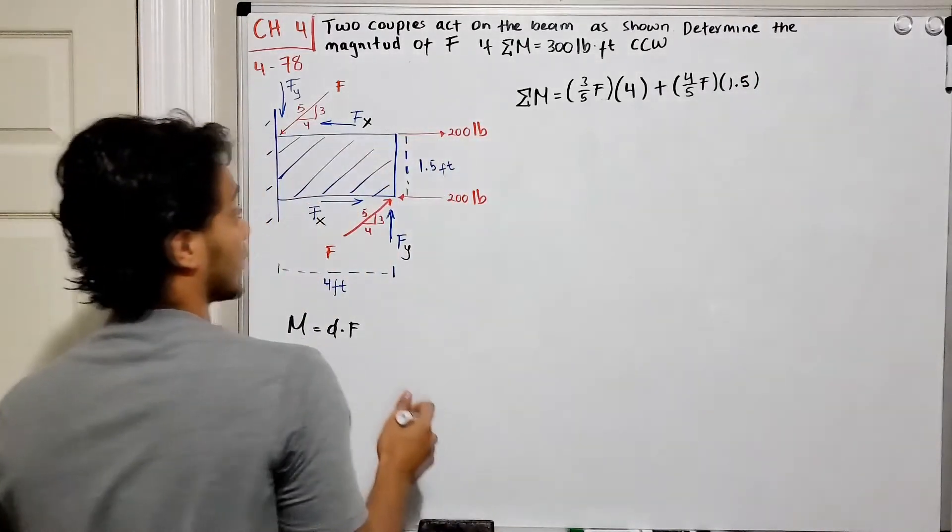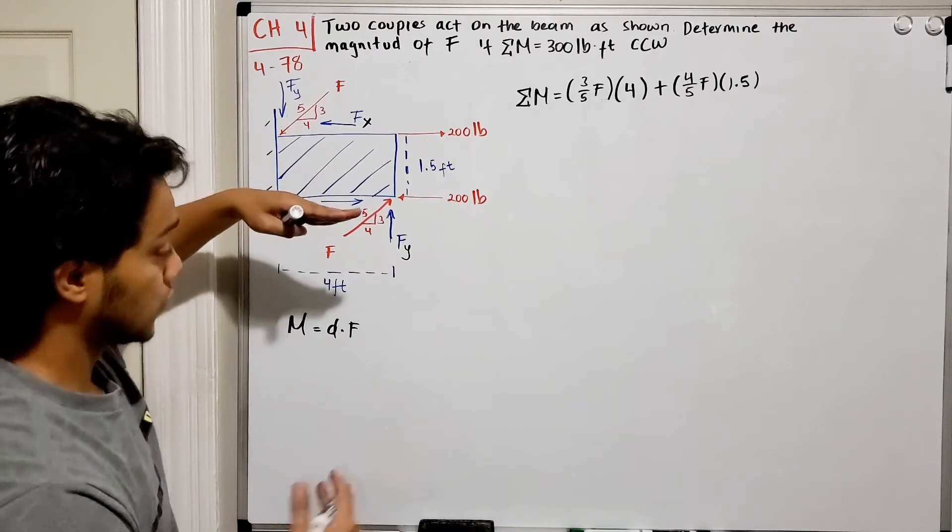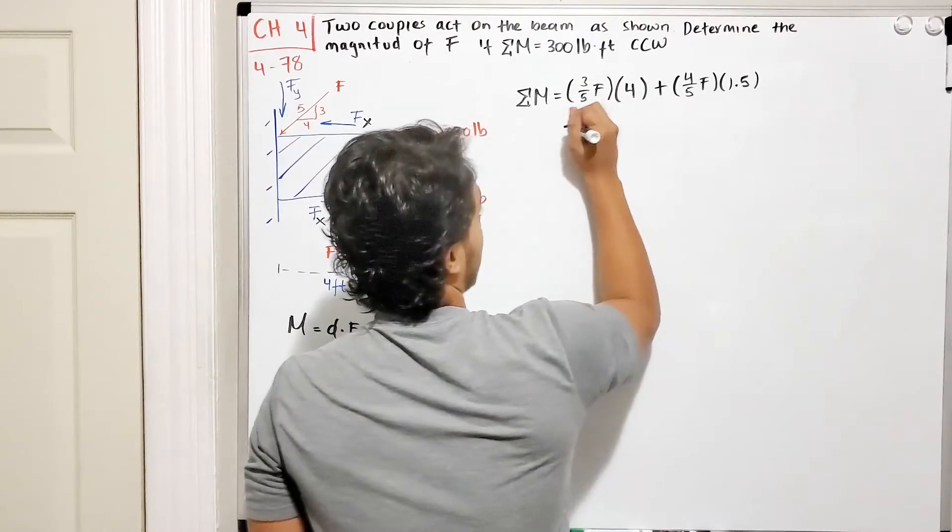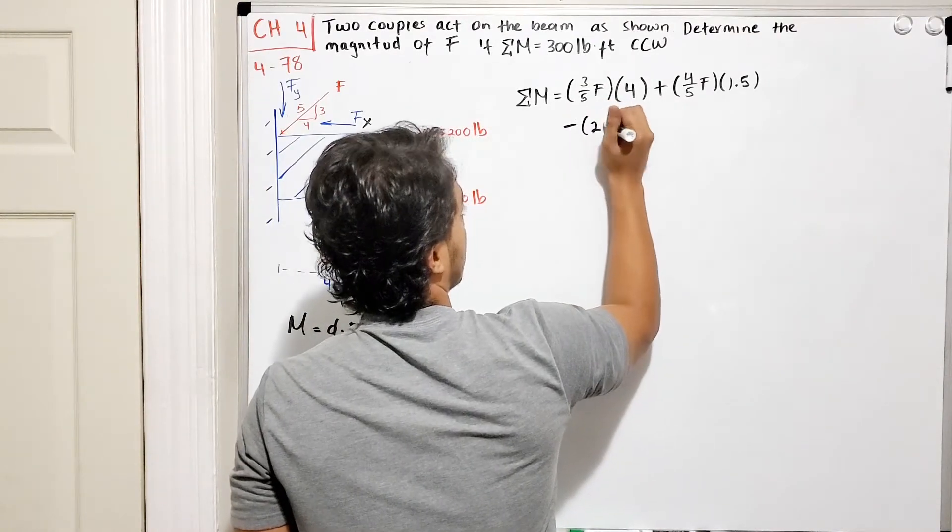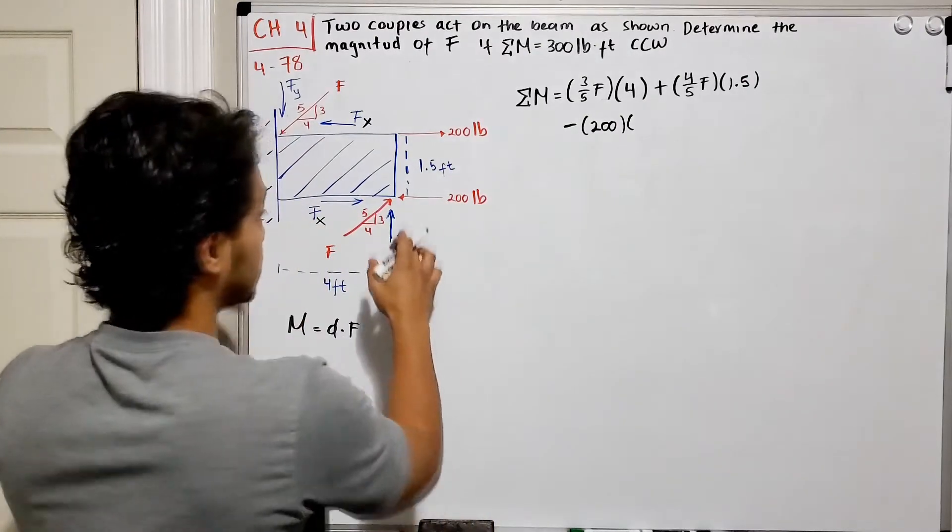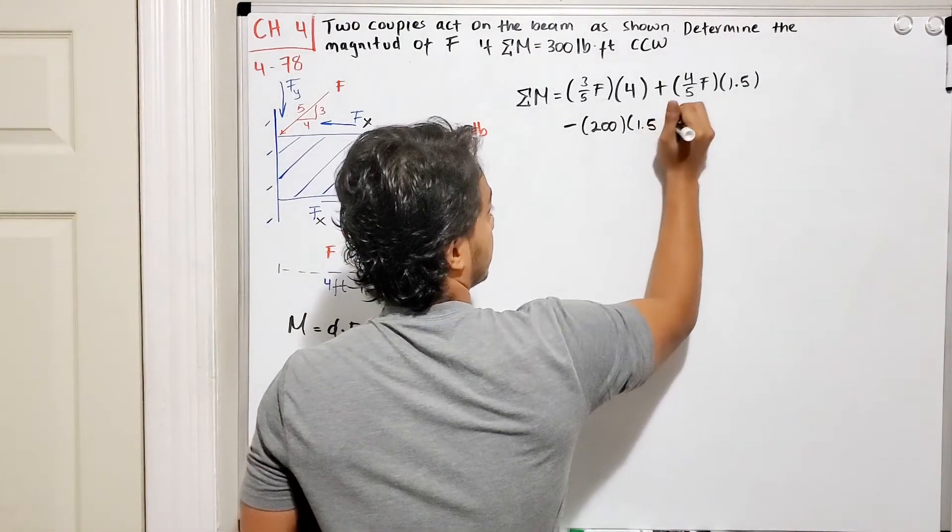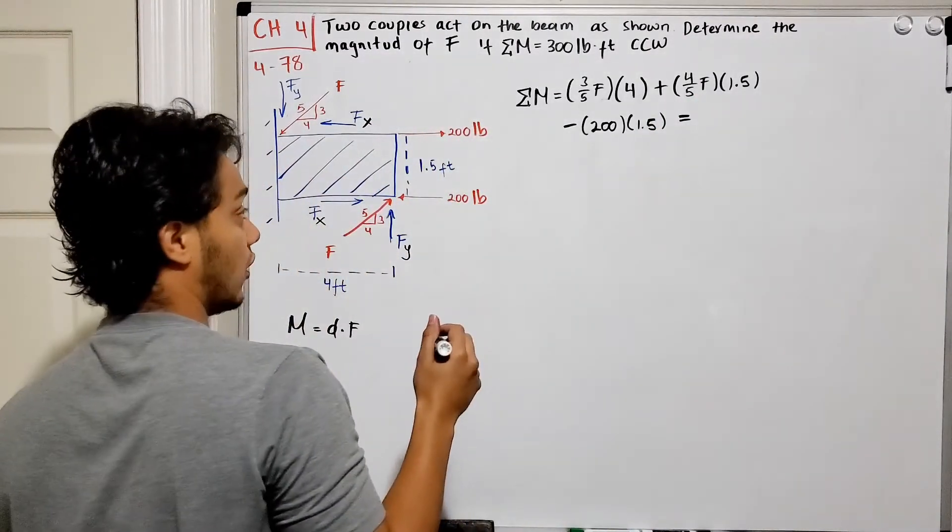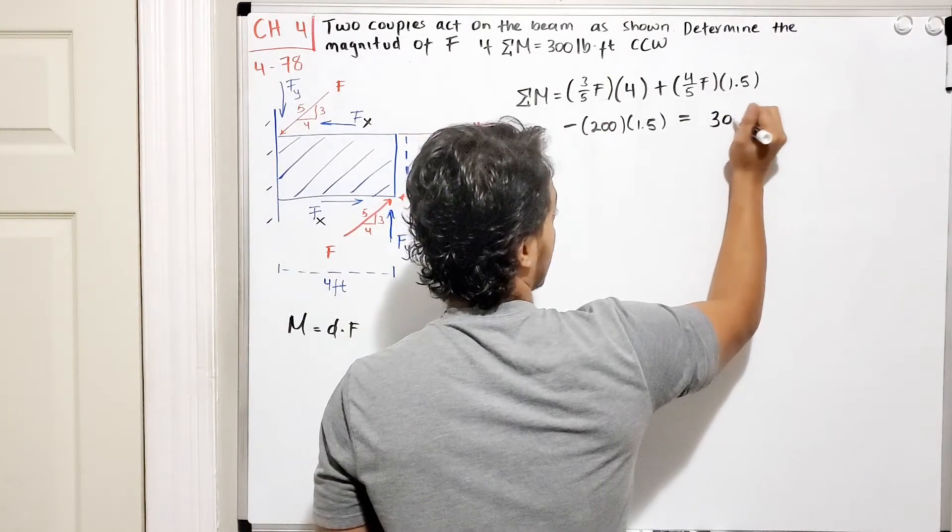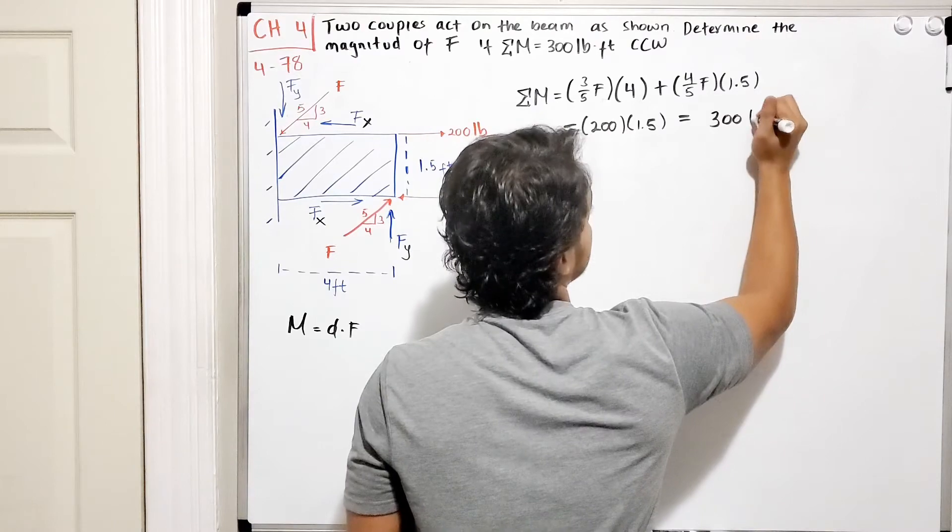Now what about this 200 pounds? So one is going this way, the other one is going this way, so it's going clockwise, so it's negative. So we're going to do minus 200 multiplied by the distance between these two guys, which is 1.5 feet. And all this should add up to 300 pounds-feet counterclockwise. Since it's counterclockwise, it's going to be positive.